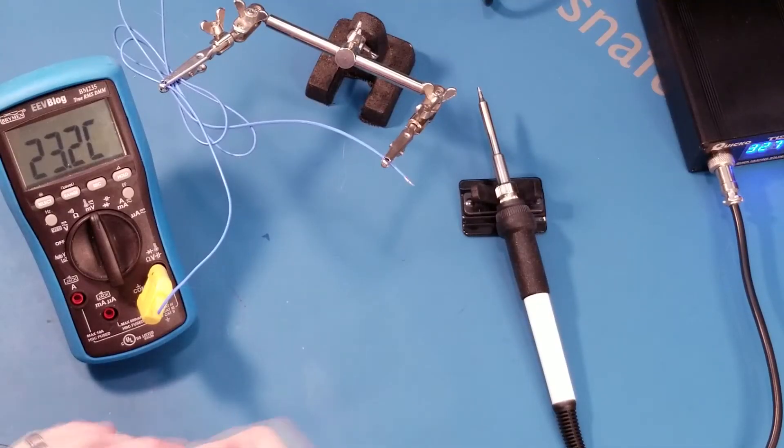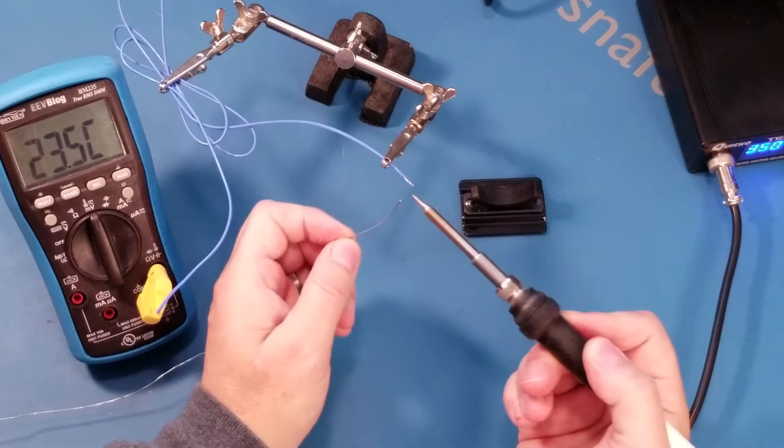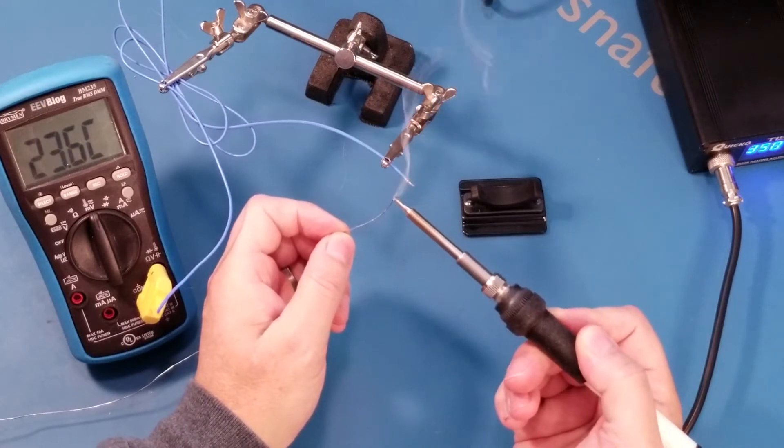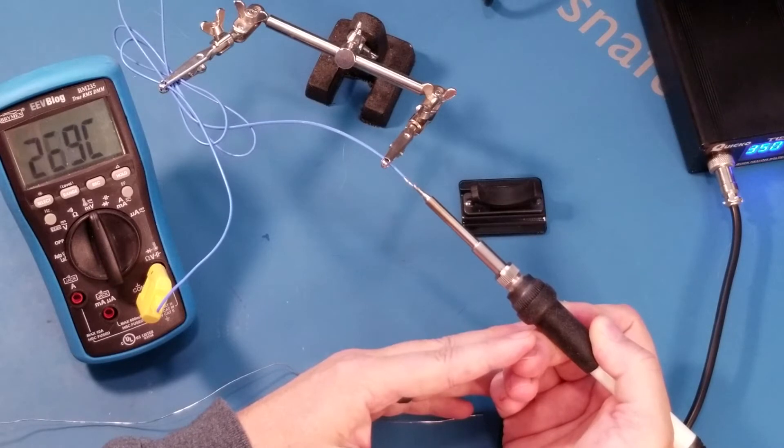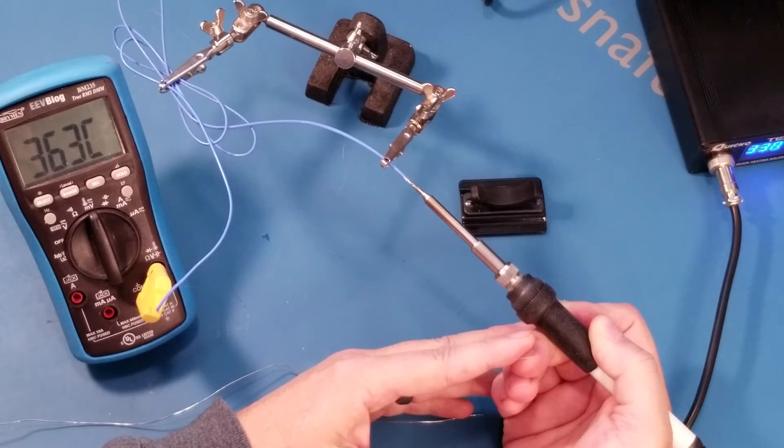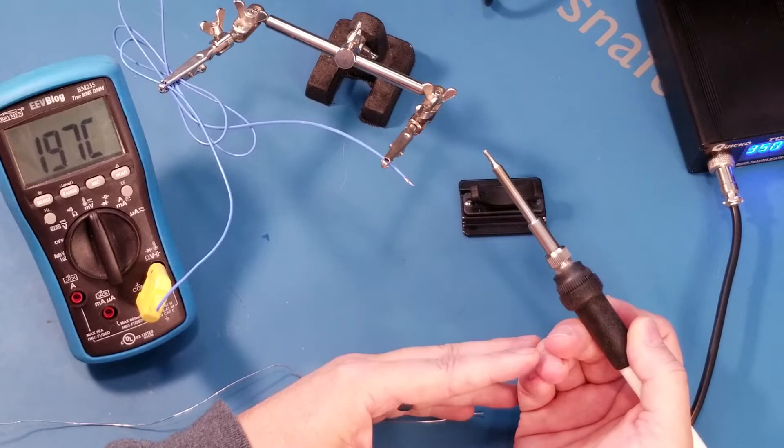First, we have the thermocouple test. Now remember, this is set for 350. We'll tin the end of this iron. We'll hold that onto the end of the thermocouple. And it's pretty accurate. That's showing us 360 on the button. 363. I'd call that a success.